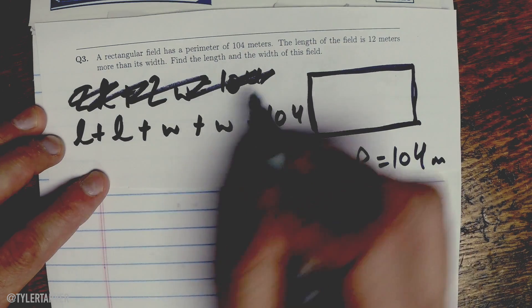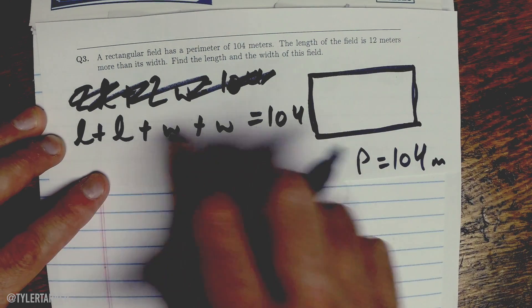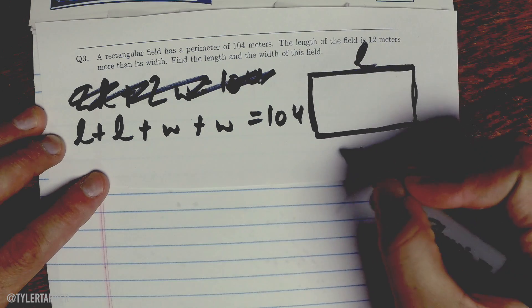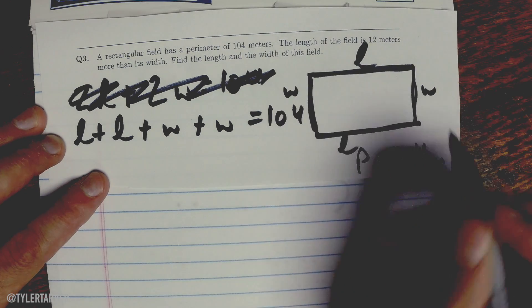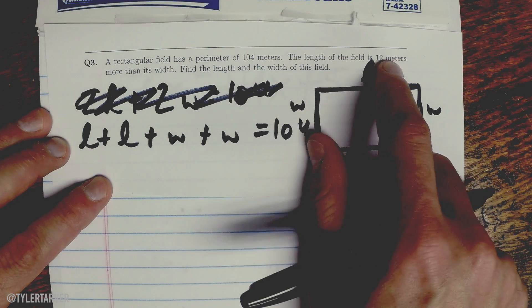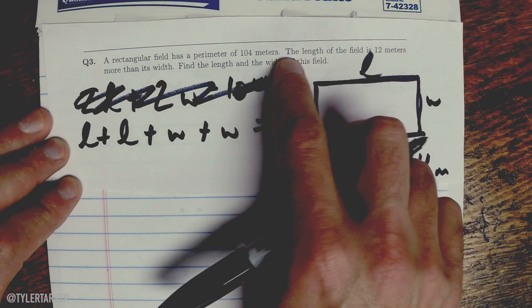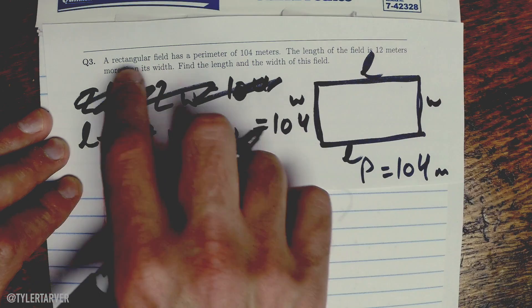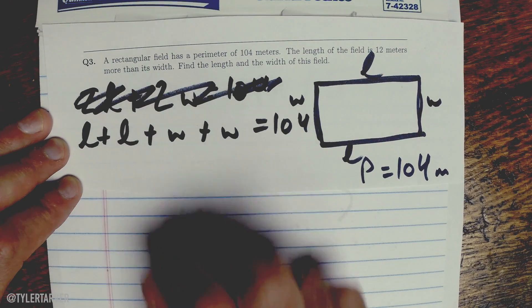Let's just do this one right here because it looks easier. You just do the length twice, width twice, so you got your length, your length, your width, your width. Alright, so let's look at the problem. It has a perimeter of 104 meters. The length of the field is 12. Boom, that was easy. Oh crud, I didn't read the whole sentence. The length of the field is 12 meters more than its width.